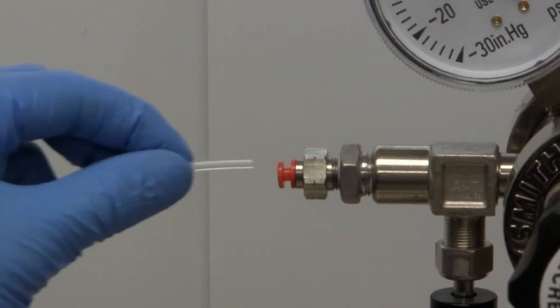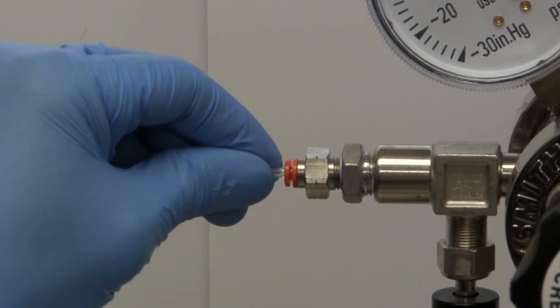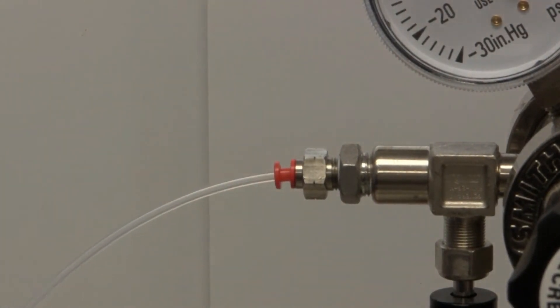Fully insert the end into the orange connector. Then, pull back on the orange ring to engage the connector and pull back on the line to make sure it is locked in place.